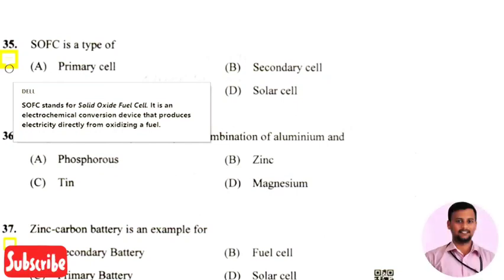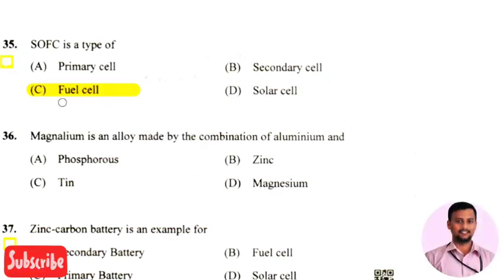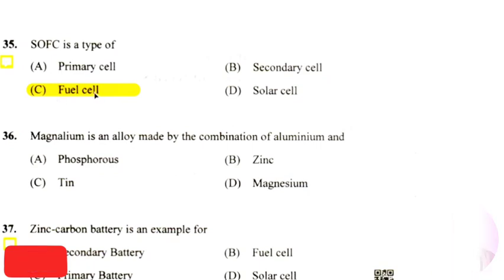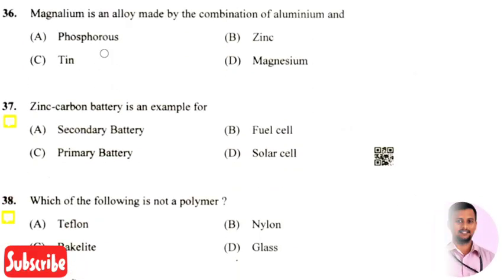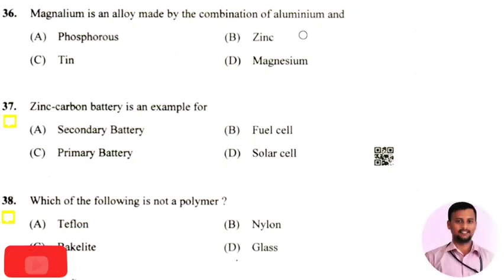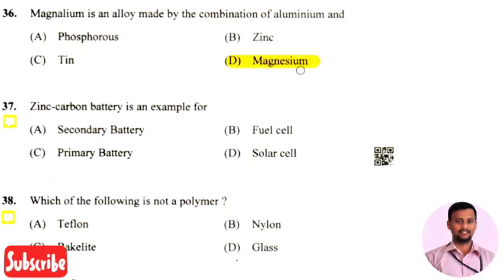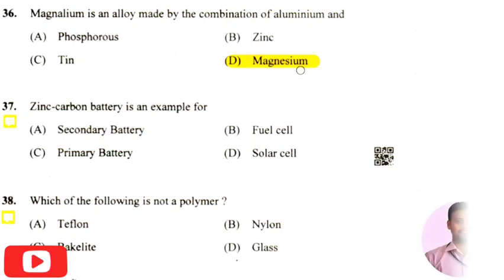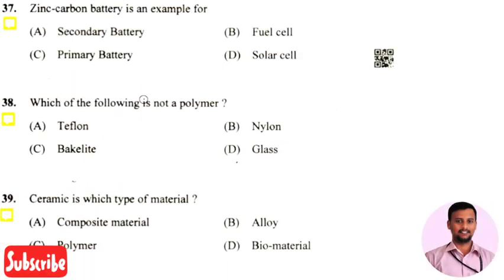The next question is: magnilium is an alloy made by the combination of aluminium and — the right answer is option four, that is magnesium. Magnilium is an alloy which is a combination of aluminium and magnesium.